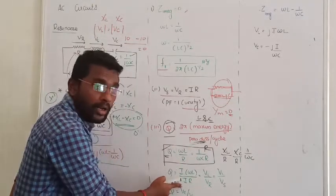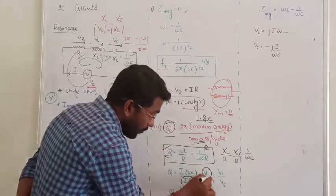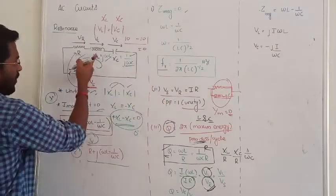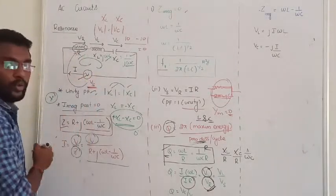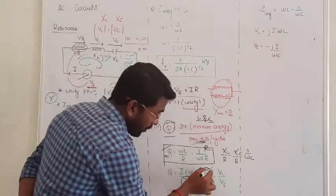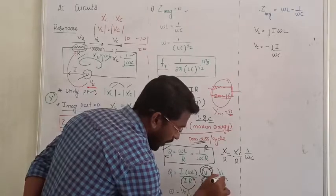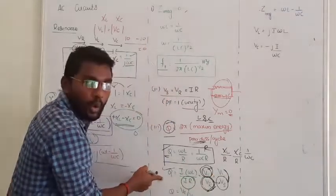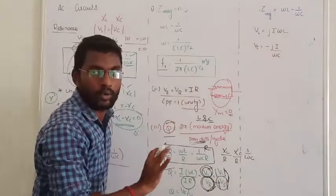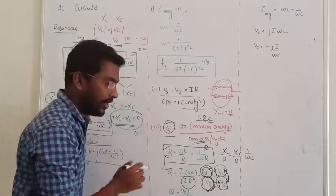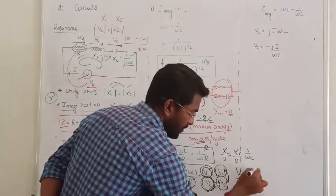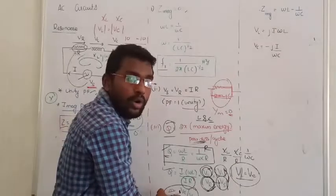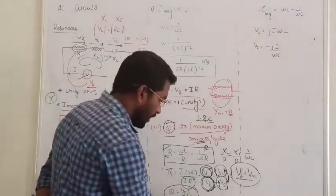Now, I times ωL gives you Vm, the voltage drop across the inductor. I times R gives you the resistive drop Vr. The ratio between voltage across the inductor and the voltage supplied by the source, or resistive drop, gives an alternative quality factor formula. At resonance, the voltage measured across the resistor equals the supply voltage, so quality factor Q equals voltage across the inductor divided by supply voltage. Since at resonance the voltage drop across the inductor and across the capacitor are always equal in magnitude, you can also write Q = VC / Vs.